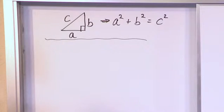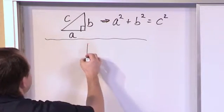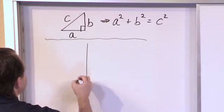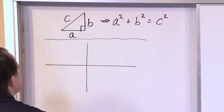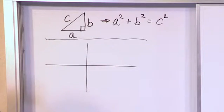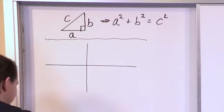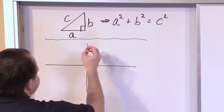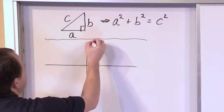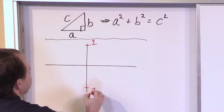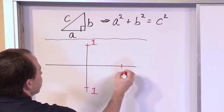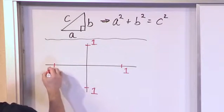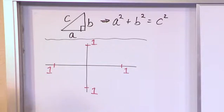Now, instead of thinking so much in terms of triangles, think about the unit circle. We use the unit circle all the time in trig and precalculus — you should know it by now. When we say unit circle, it just means it has a radius of one. So I'm going to label ones everywhere just as a reminder that we're talking about a circle with radius one.